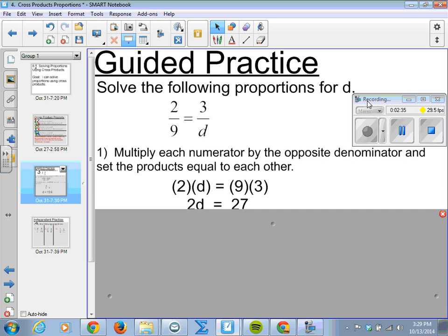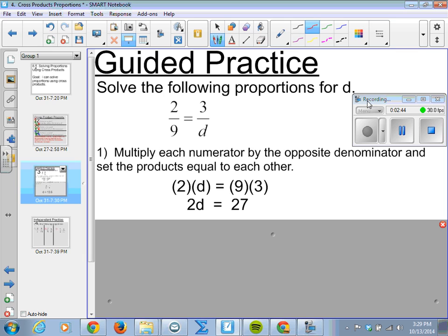Multiply each numerator by the opposite denominator, and set the products equal to each other. So, 2 times d, multiply diagonally, just write as 2d. 9 times 3, 9 times 3 is 27. So, we have 2d equals 27.